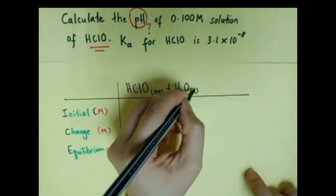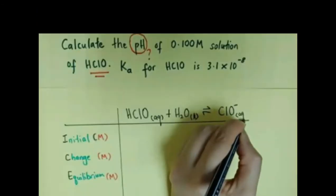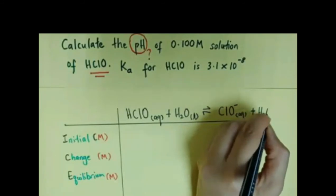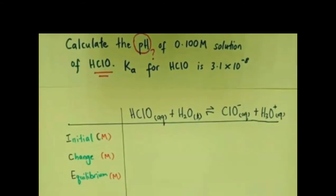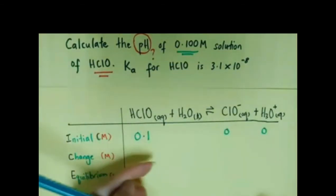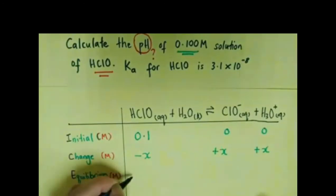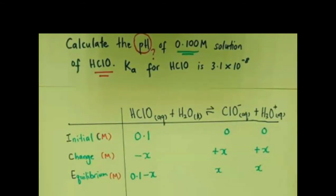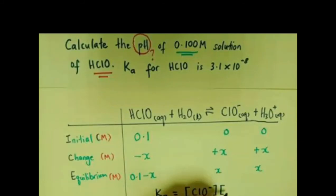HClO, or hypochlorous acid, is a weak acid, so when we write the dissociation equation we use a reversible arrow. The initial concentration of HClO is 0.1. For the forward reaction, the change will be negative x, plus x, plus x. Let's complete the equilibrium concentrations in the ICE table.